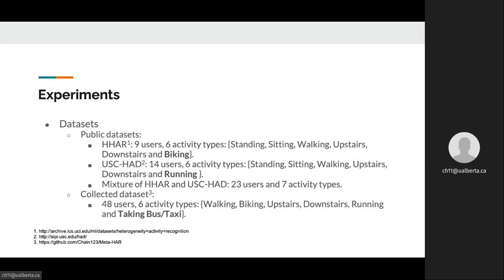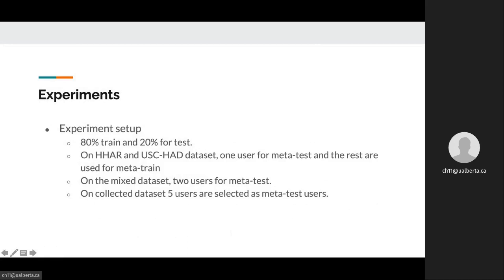We conducted experiments on three datasets to demonstrate the effectiveness of our proposed method. HHAR and USC-HAD are two widely used public datasets, each with around 10 users, and six types of activities are selected in this paper. We also collected our own dataset with 48 users and six types of activities. All datasets are now publicly available through the given links.